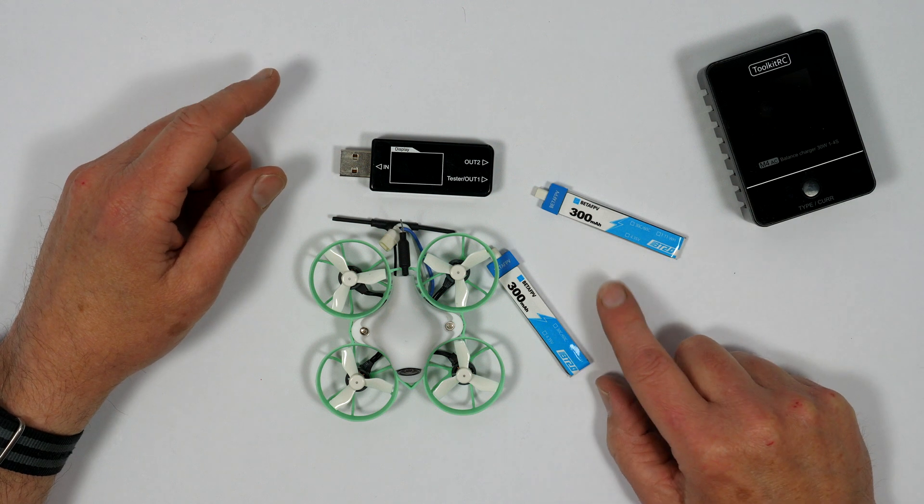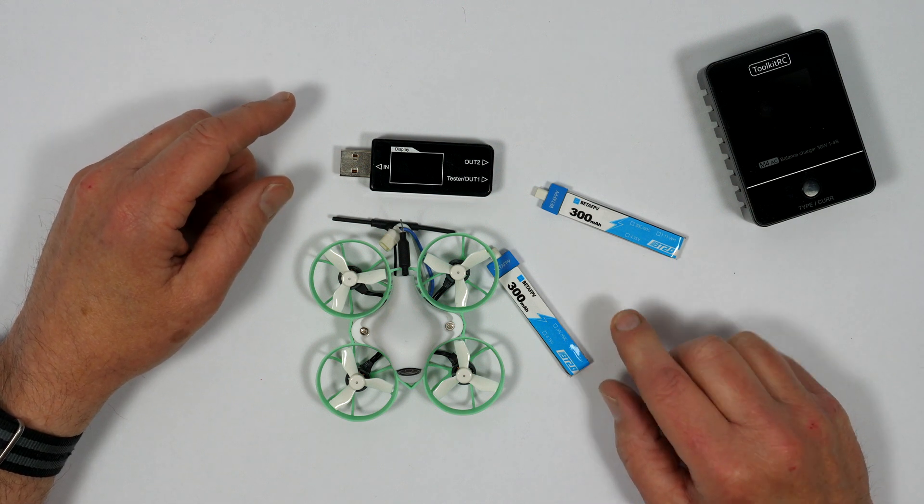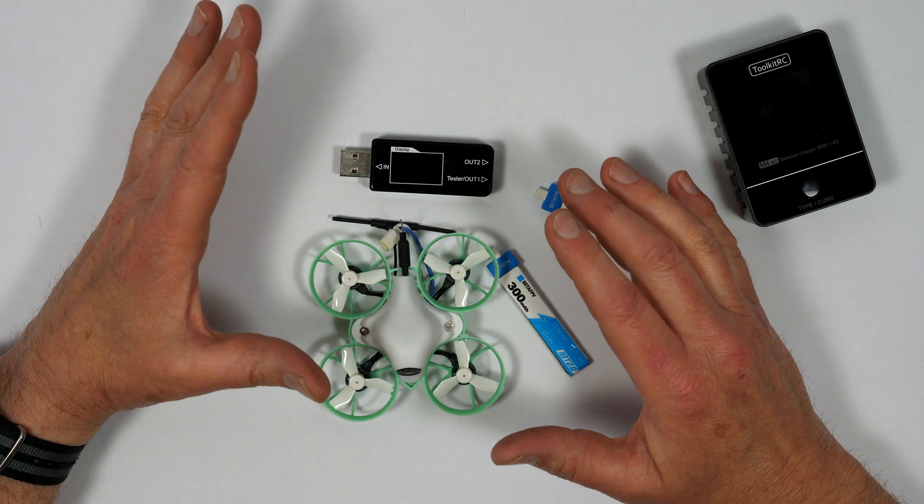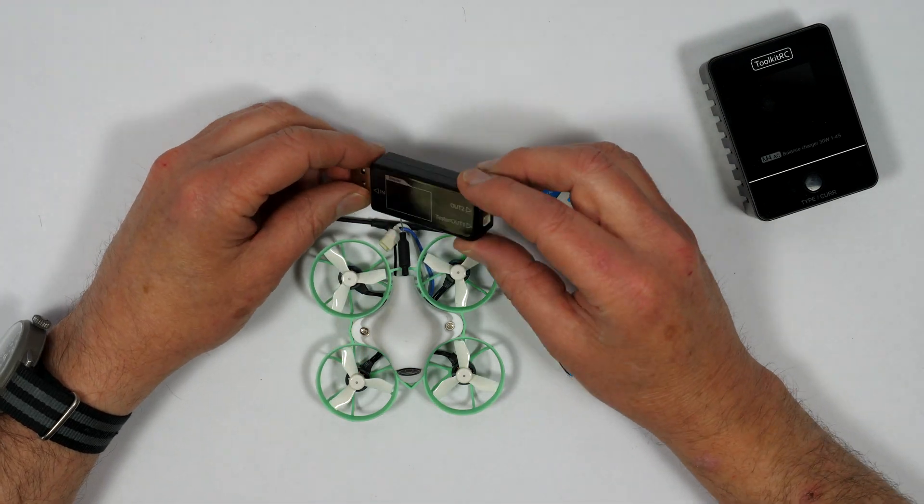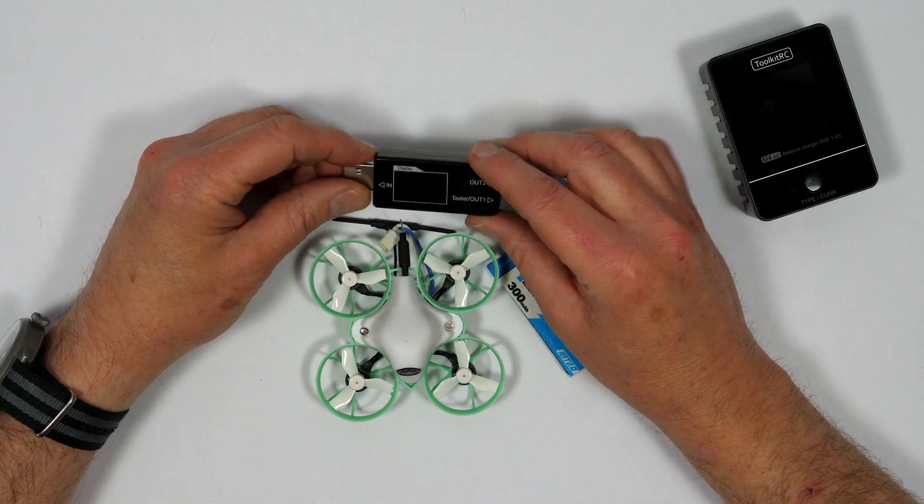Charging 1S LiPo batteries like these is a bit of a pain. When you buy a small drone that uses 1S LiPos, you'll normally get a small USB-powered charger, something like this.